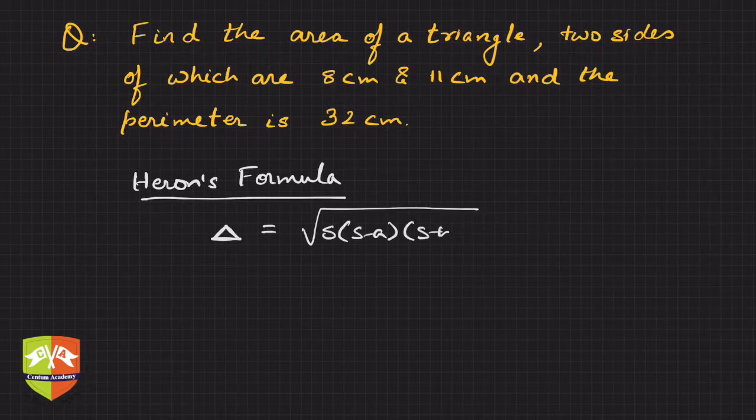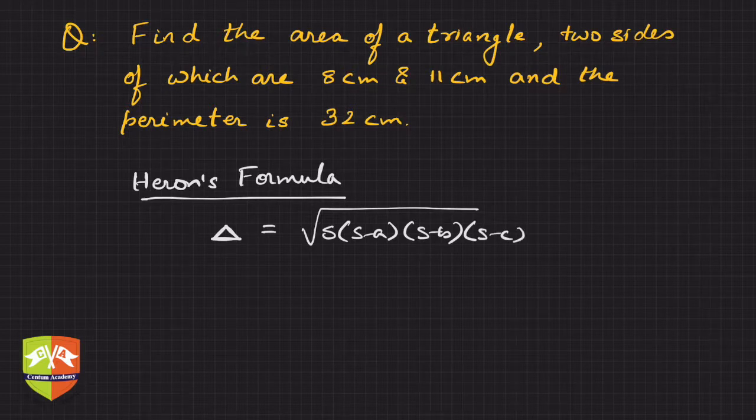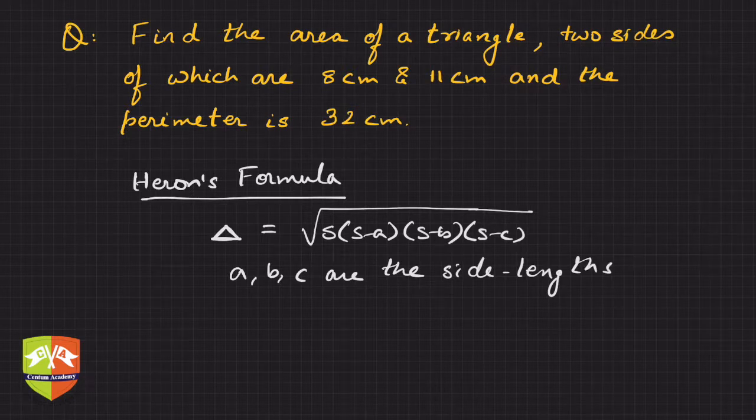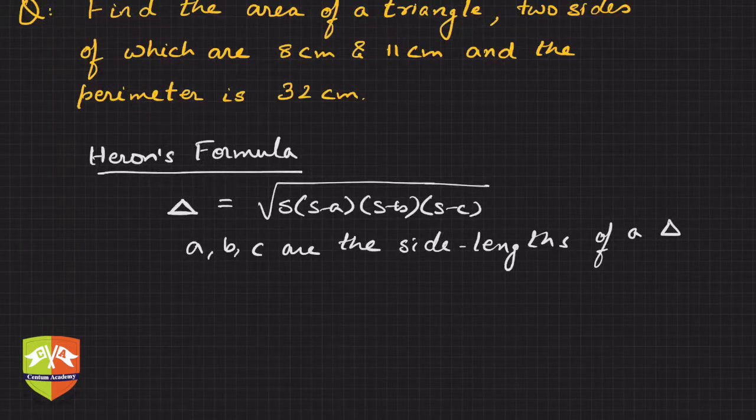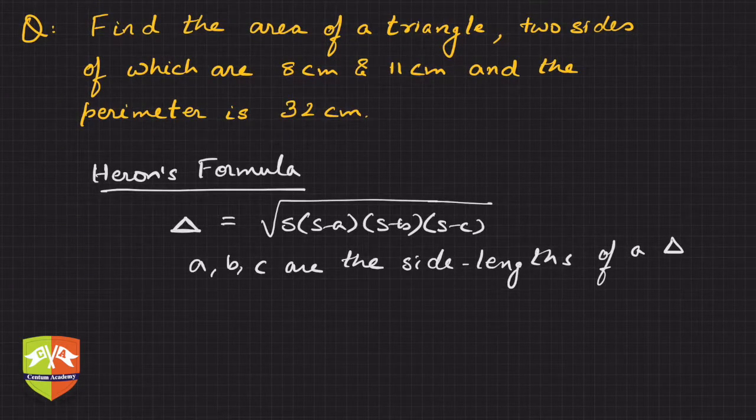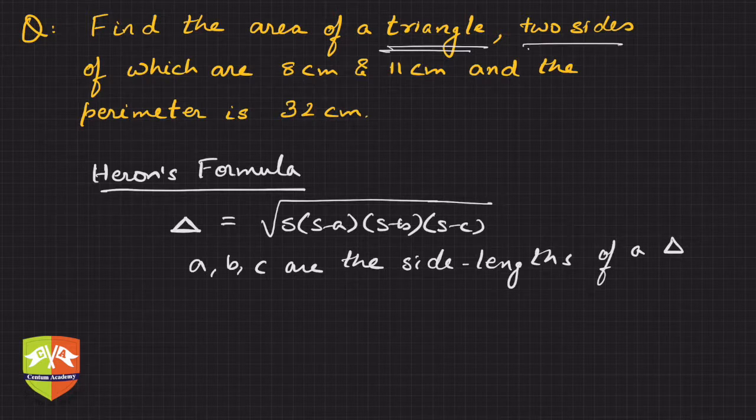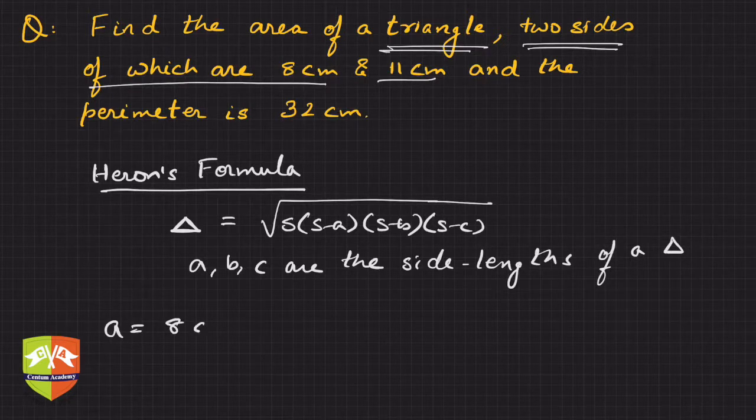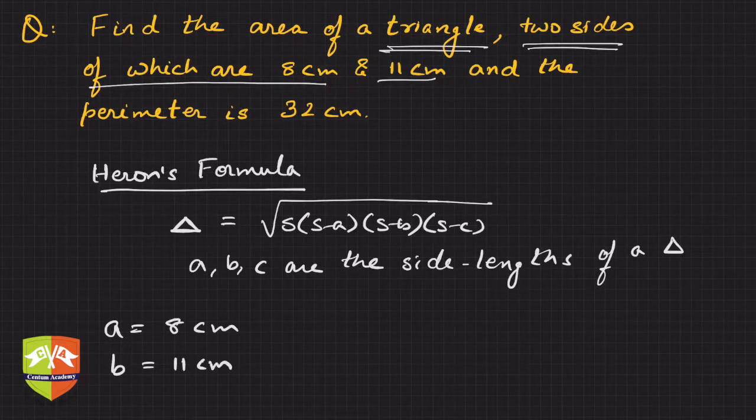Where a, b, and c are the side lengths of a triangle. Let's now do the sum. It says find the area of a triangle, two sides of which are 8 centimeter and 11 centimeter. Hence a equals 8 centimeter and b equals 11 centimeter. Two sides are given, c is not known.